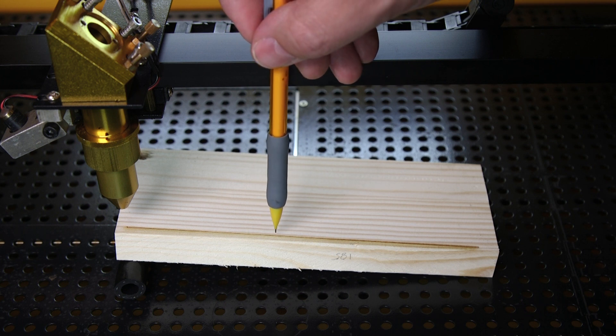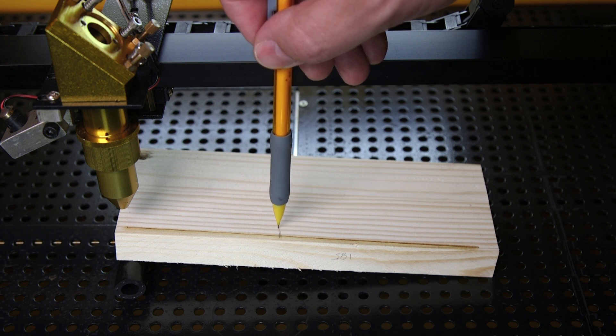When that's done, have a close look at your line and find the point where the line is the thinnest. Mine looks the thinnest right about here.